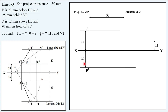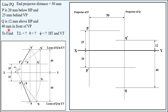Similarly, 12 mm above XY gives the front view point Q', because Q is above HP. Since Q is 40 mm in front of VP it is in the first quadrant, so the front view is above XY and the top view is below XY. The top view Q is 40 mm below the XY line. Now if you join P' and Q' you get the front view of the given line, and joining P and Q gives the top view of the given line.